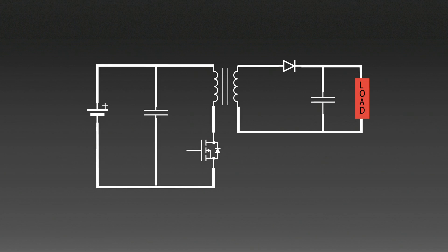A primary side regulated flyback converter is a type of DC to DC converter that provides electrical isolation between the input and output while regulating the output voltage without requiring feedback from the secondary side. Instead, it uses voltage sensing from the primary winding to achieve the regulation. Let's break it down step by step. The flyback converter consists of the following key components.